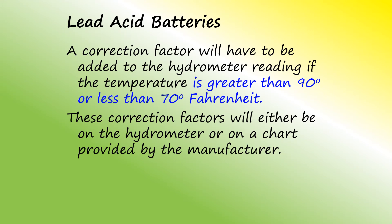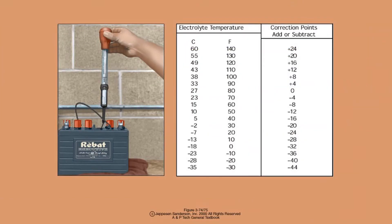The specific gravity of the electrolyte mixture is also dependent upon the temperature. Whenever the ambient temperature is other than 80 degrees Fahrenheit, a correction factor will have to be added to the hydrometer reading. Here is an example of a correction factor chart for the specific gravity of batteries at temperatures other than 80 degrees Fahrenheit.